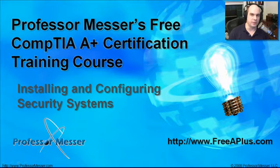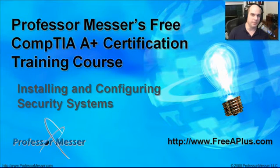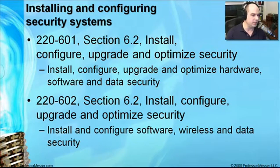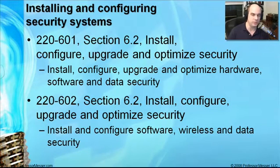Welcome to this module of Professor Messer's free CompTIA A-plus certification training course on installing and configuring security systems. I'm your host James Messer, and in this module we're going to discuss the requirements from our CompTIA exam 220-601 section 6.2 and 220-602 section 6.2, where we are installing, configuring, upgrading, and optimizing security — not only the hardware and the software, but also some of the data security functions associated with those.